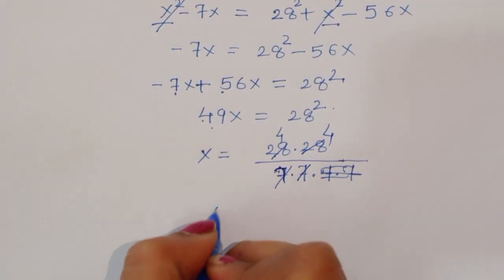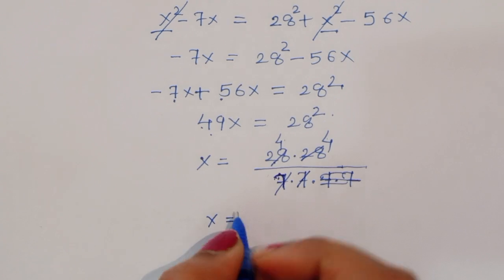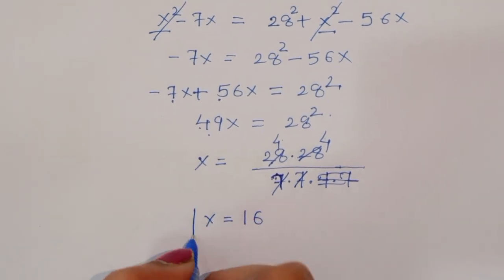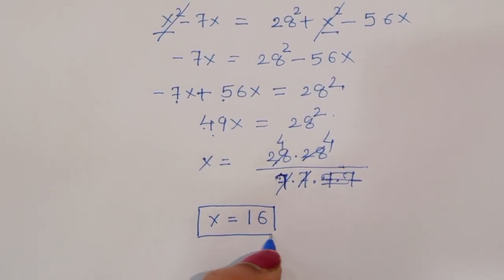So x is equal to 4 times 4, which is 16. The value of x is equal to 16.